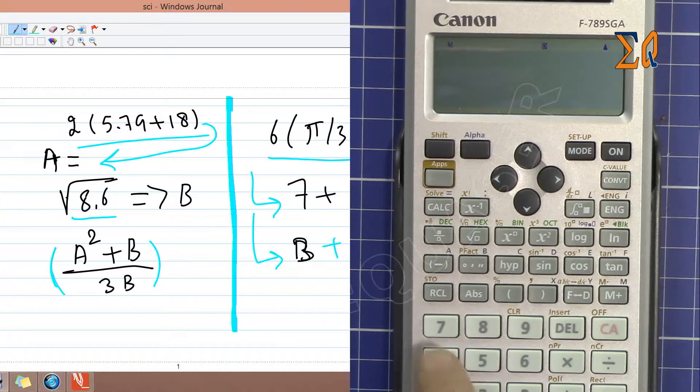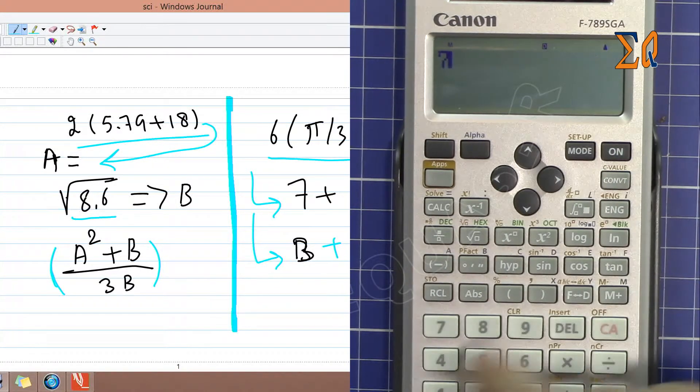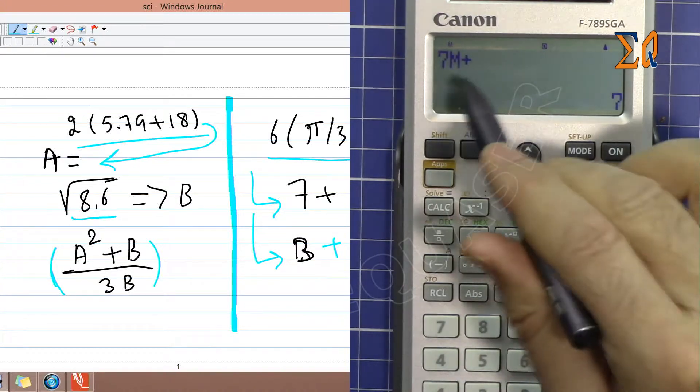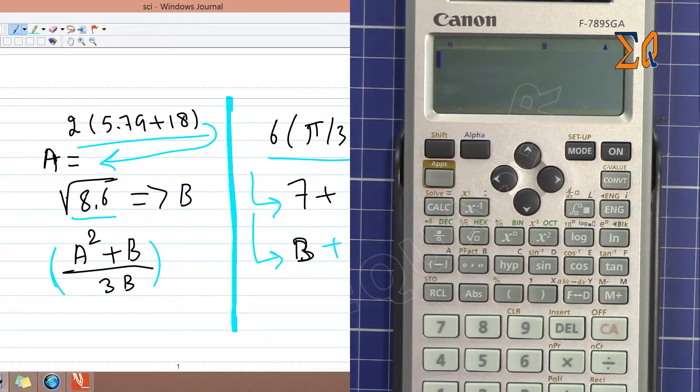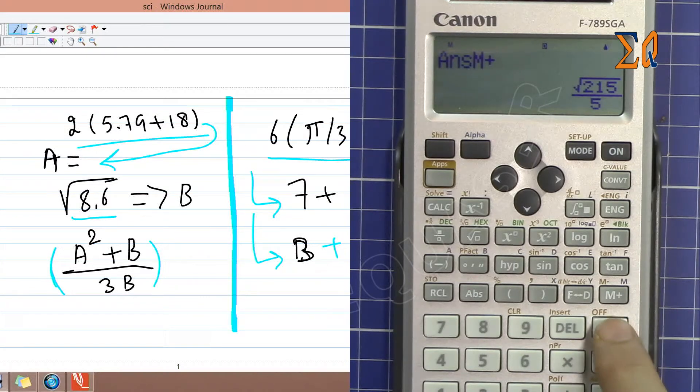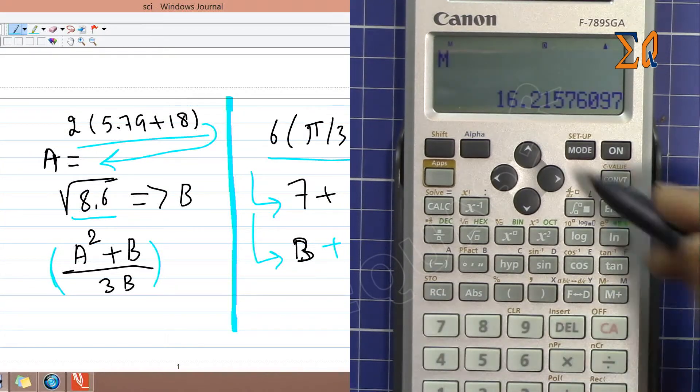Now let's add 7 to the memory. So press just M, or let's say other calculation, whatever you have on the screen, just press this. The value will go to memory, will be added to the memory. Now let's add B to the memory. So recall B and then add. So all the values have been added to recall it just see it this way.